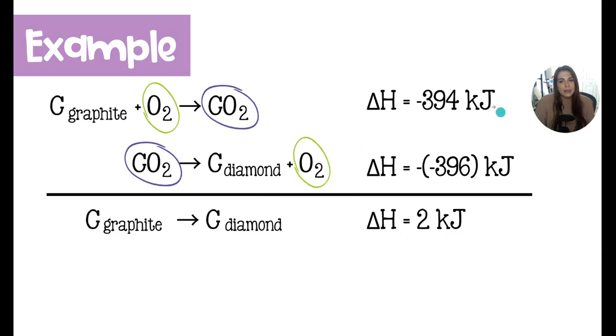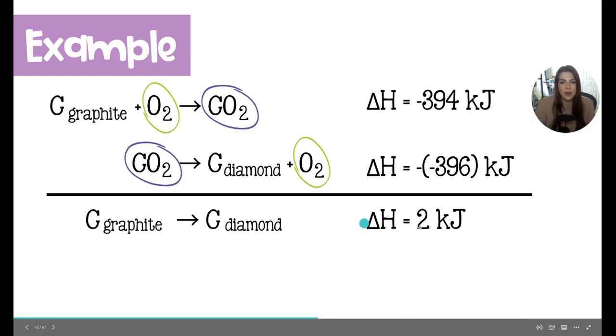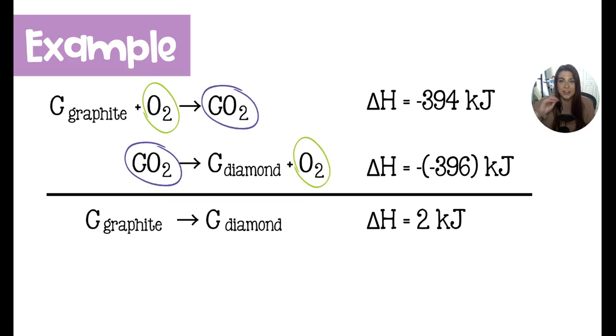And when we add the ΔH values, negative 394 and a negative negative 396, in total our reaction is only two kilojoules of energy to turn graphite into a diamond. That sounds crazy, but that is because there's not a lot of bond changes. There's a lot of pressure, there's a lot of external stuff, but the reaction itself doesn't have a huge change in energy.